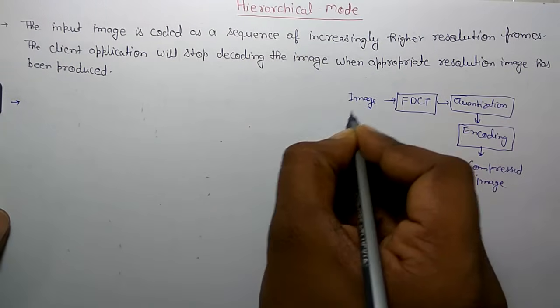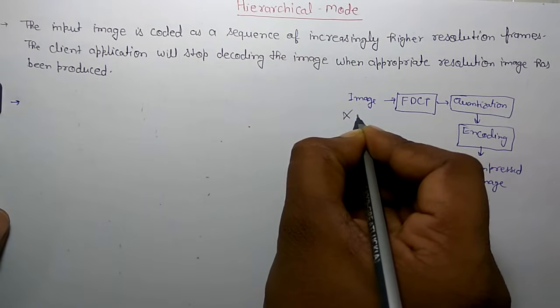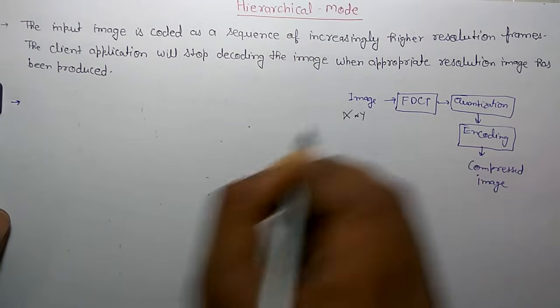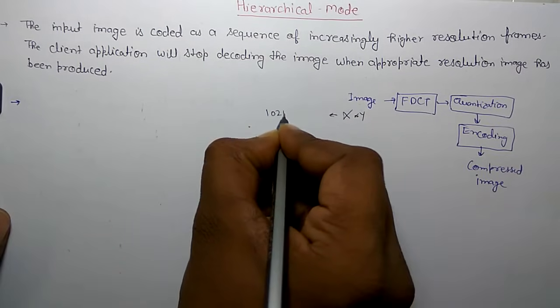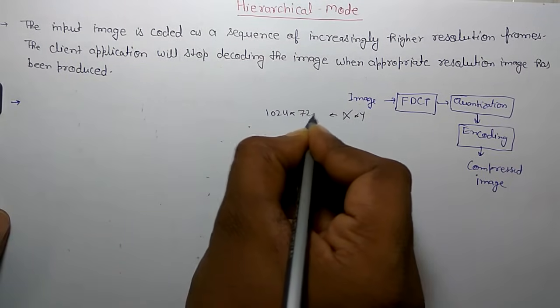Its meaning is that your image has a resolution of X cross Y. For example, this is a resolution of 1024 cross 720.